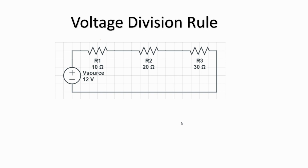The voltage across a component is actually proportional to its resistance. In order to arrive at that formula, let us mark the voltage drops. I'll call this Vr1 —